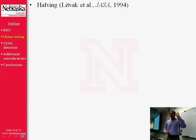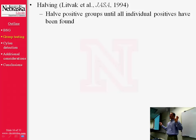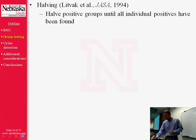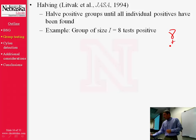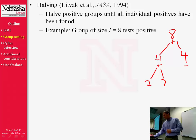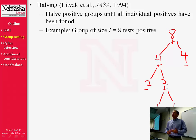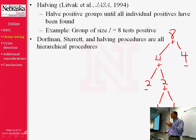The third retesting procedure is called halving. Simply, if you have a positive group, divide it into two equal halves and retest individuals in those two halved groups. If any of those groups come back positive, divide it in half again and keep going. So if I have a group of size eight that tests positive, I divide it into two groups of size four, retest them. Suppose I get one positive and one negative — I redivide that group of size four into groups of size two, keep going until I test individually, and I've found the cause of my positive group. Halving, Dorfman, and Sterrett procedures are often referred to as hierarchical procedures because we proceed in a hierarchical manner — do something once, let that decide what we do next.